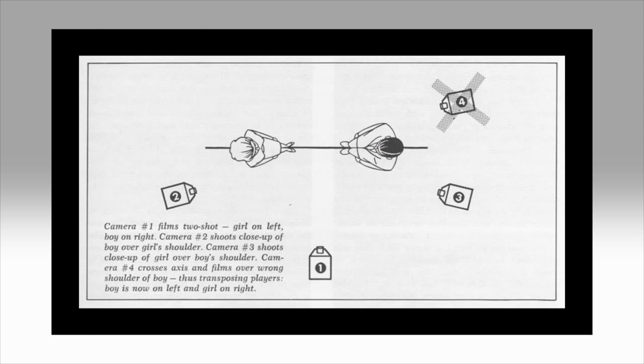The first thing to consider when filming a conversation is the imaginary line that runs parallel between the two actors performing the scene. This imaginary line is known as the line of action.